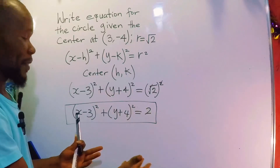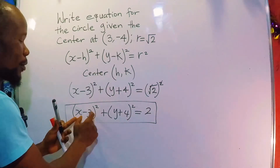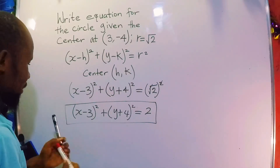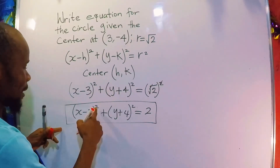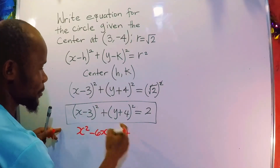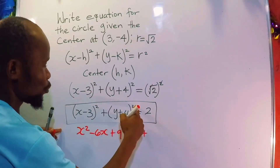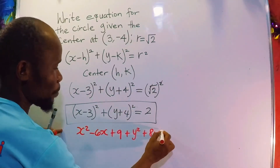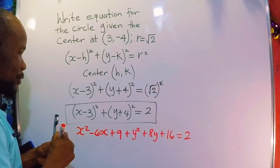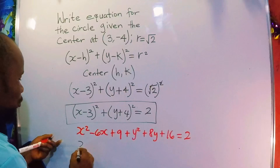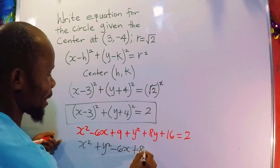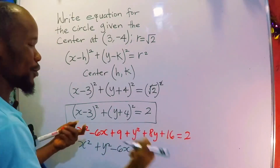You can express this in another way — in standard form — which means you multiply each binomial by itself 2 times. That is: x squared minus 6x plus 9, plus y squared plus 8y plus 4 squared, which gives us 16, equal to 2.